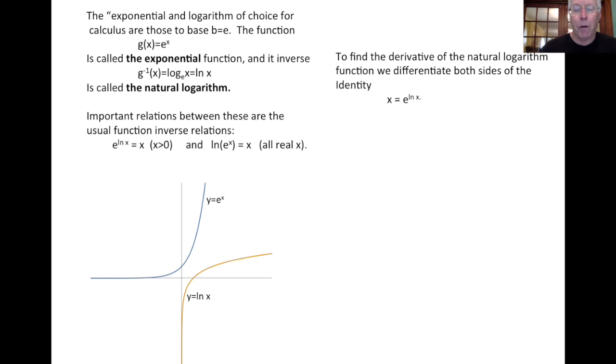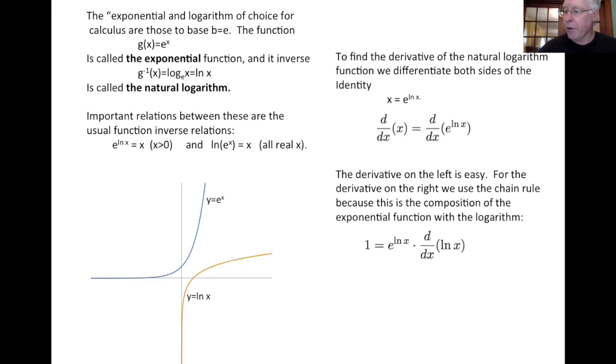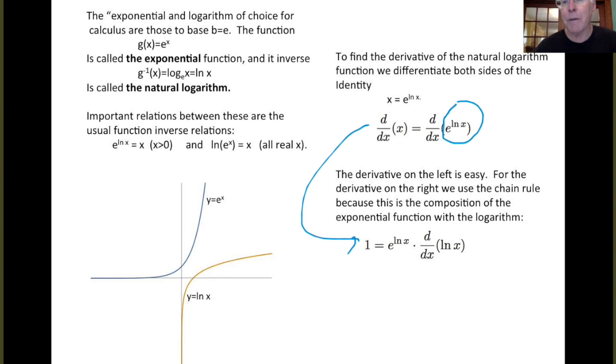Now, let's take a look at the derivative of the logarithm function. We can do this by going back and using the formula for the derivative of an inverse, but we can also find this by just differentiating this relationship e to the log x equals x. So we've written that here, just swap sides on the equal sign. We're going to do this by differentiating both sides with respect to x. The derivative of x is the derivative of e to the log x. This derivative on the left is very easy, it just becomes 1. And on the right, we have to use the chain rule because this is the function composed with the logarithm.